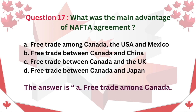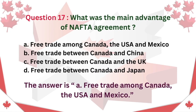Question 17. What was the main advantage of the NAFTA agreement? A. Free trade among Canada, the USA and Mexico B. Free trade between Canada and China C. Free trade between Canada and the UK D. Free trade between Canada and Japan. The answer is A. Free trade among Canada, the USA and Mexico.